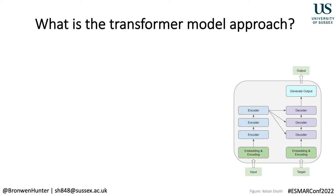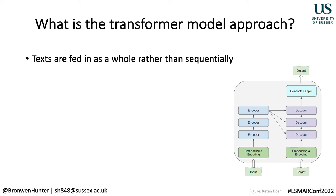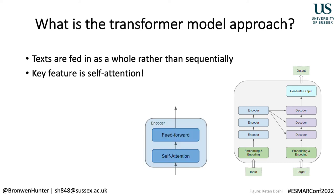So what is the transformer model approach? Whilst I don't have time to go through the full architecture, I'll highlight some key features. In contrast to recurrent neural networks, texts are fed in as a whole rather than sequentially, meaning these models are much quicker to train. The key feature is what we call self-attention. This mechanism looks at an input sequence and decides at each step which other parts of the sequence are important. For example, in 'the boy is holding a blue ball,' self-attention learns that holding, blue, and ball are all related to each other, but the word blue is not related to the word boy — building a more realistic representation of natural language.